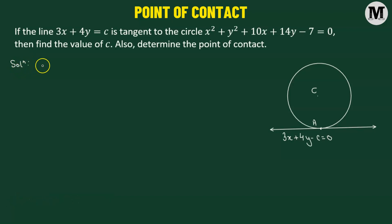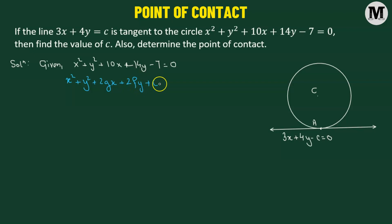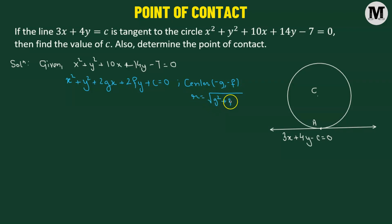We start by considering the given circle: x squared plus y squared plus 10x plus 14y minus 7 equals 0. We compare it with the general equation of a circle: x squared plus y squared plus 2gx plus 2fy plus c equals 0. Our goal is to find the constants g, f, and c, because from those we get the center at (negative g, negative f) and the radius r equals the square root of g squared plus f squared minus c.